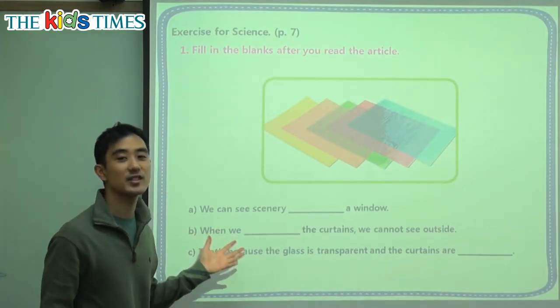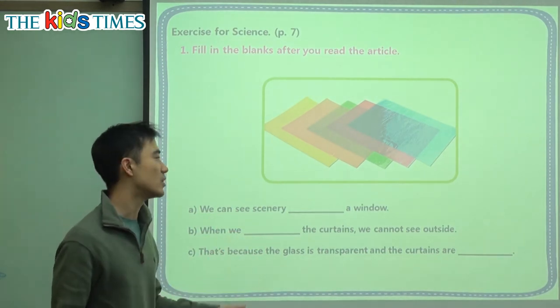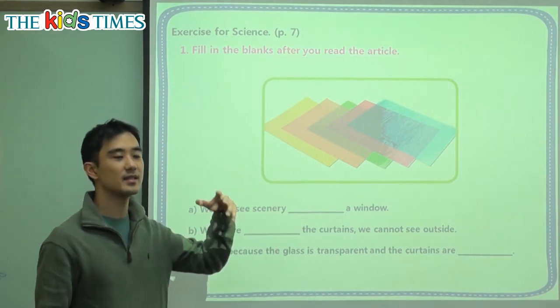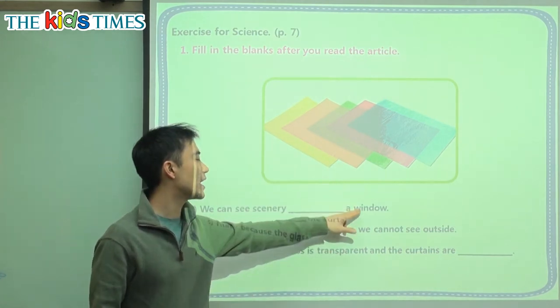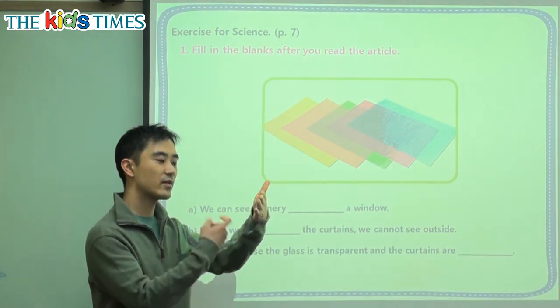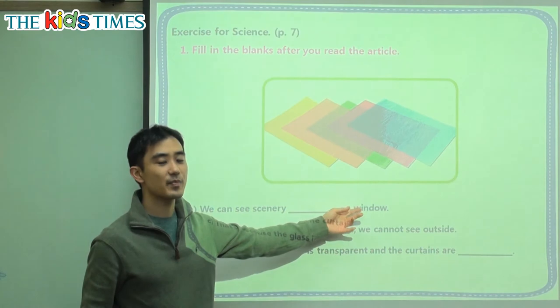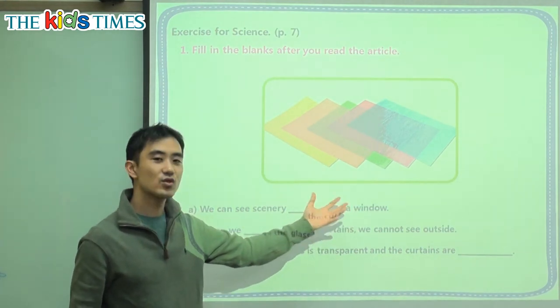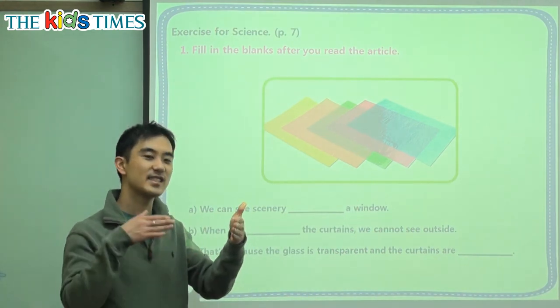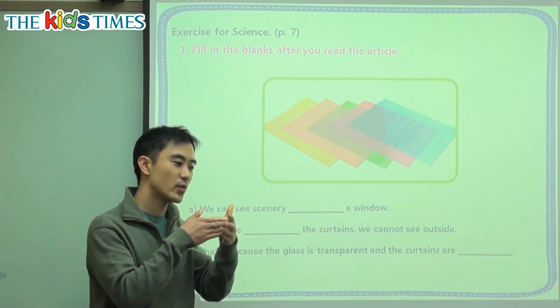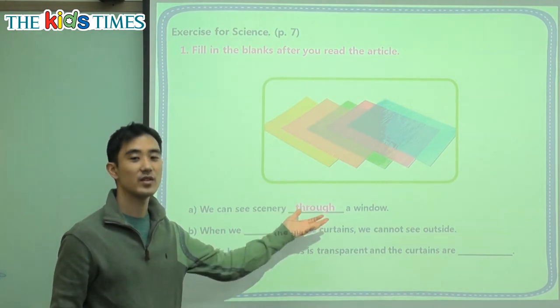Alright, we have three exercises here. First one, we can see scenery, blank, a window. So scenery is what we can see outside. The cars, and the trees, and the animals. And we have a window. So you're inside your room, we have a window, and there's a scenery outside. And this window, is it transparent or not transparent? Window is transparent. So that means we can see past it. We can see through a window because a window is transparent.